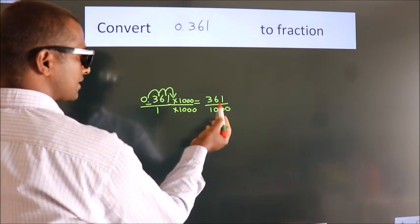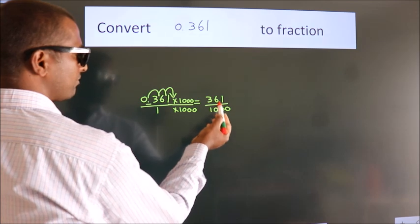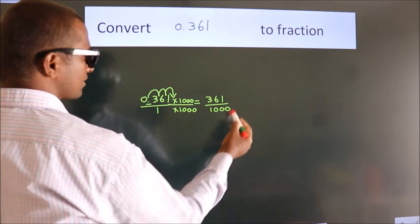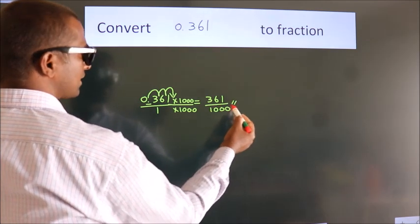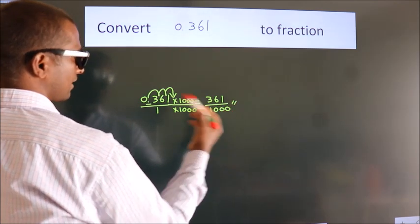This cannot be simplified any further. So this is our fraction: 361/1000.